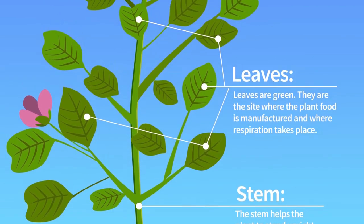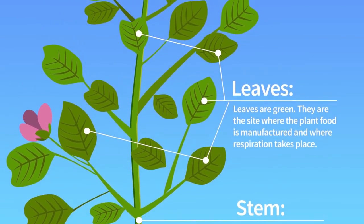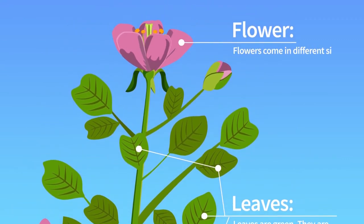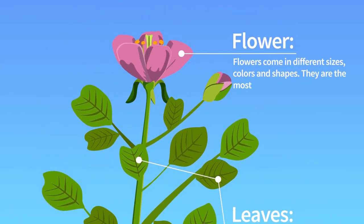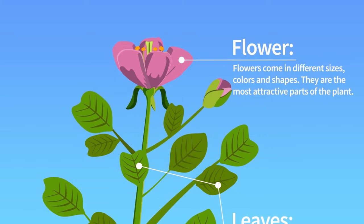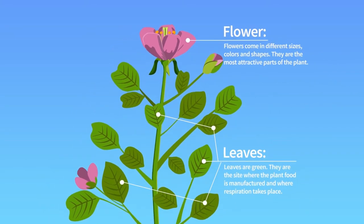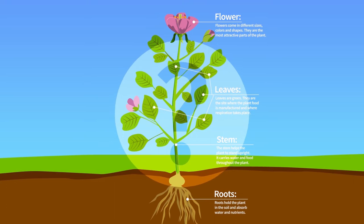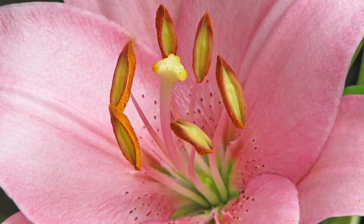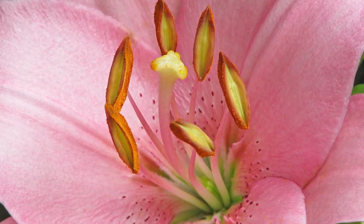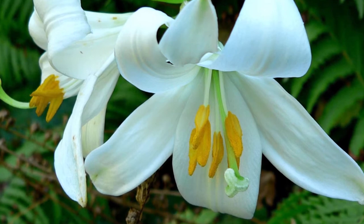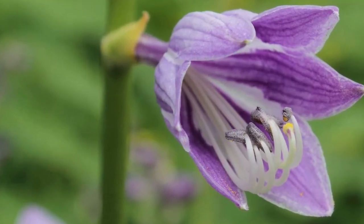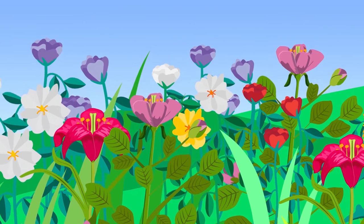The leaves are green. They are the site where plant food is manufactured and where respiration takes place. The flowers come in different sizes, colors, and shapes — they are the most attractive parts of the plant, because the flower contains the reproductive organs of the plant. Just like any other living being, flowering plants reproduce.